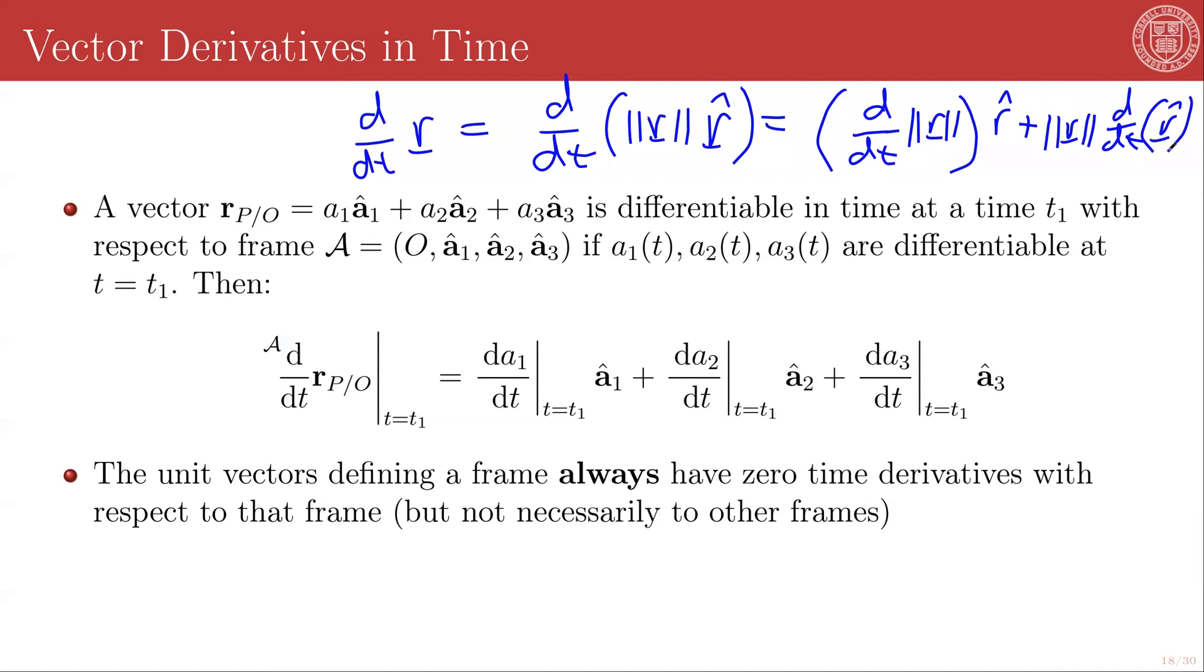And the problem here is that even though vectors themselves, position vectors, geometric vectors, are just geometric blobs, and they are completely and entirely frame independent, their time derivative cannot be frame independent. Because when we take the derivative of this vector, we are talking about how this vector is changing. And so we have to describe what it's changing with respect to.